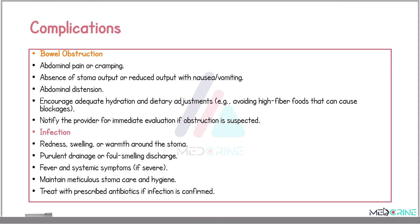Bowel obstruction can also occur as a complication in patients with ostomies. Patients will complain of abdominal pain or cramping, absence or reduced stoma output, nausea and vomiting, and abdominal distension. Management includes encouraging adequate hydration and dietary adjustments — such as avoiding high-fiber foods which can cause blockages — and notifying the healthcare provider immediately if a bowel obstruction is suspected.